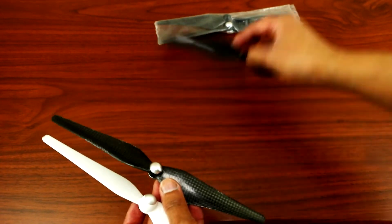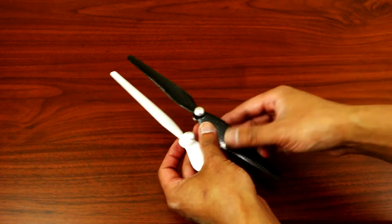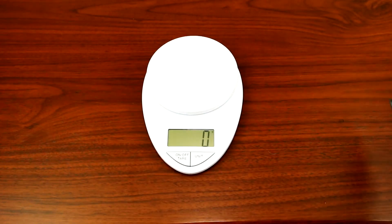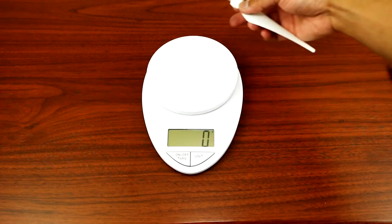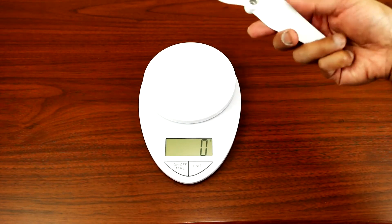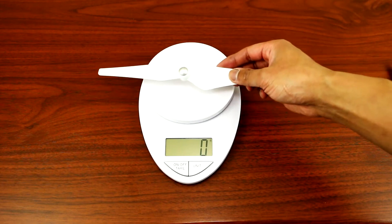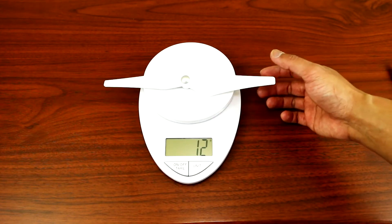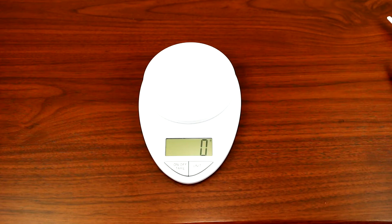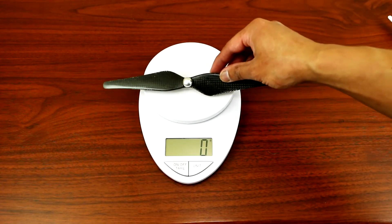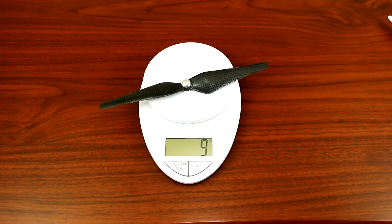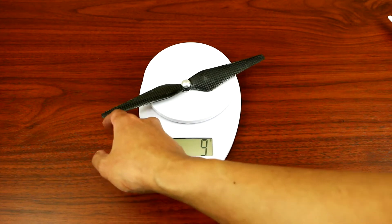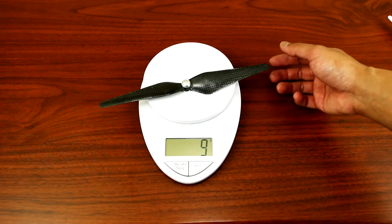Okay, so let's weigh them up and see the difference. Let's weigh the original prop first. I'm getting 12 grams. All right, let's weigh the carbon fiber prop. I'm getting 9 grams. Okay, so there's a big difference in weight.